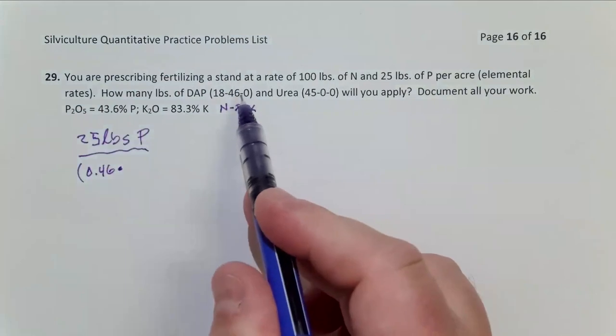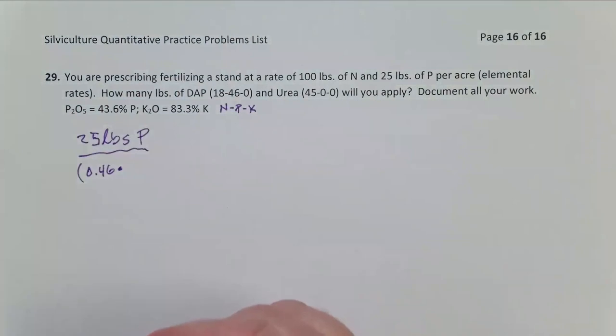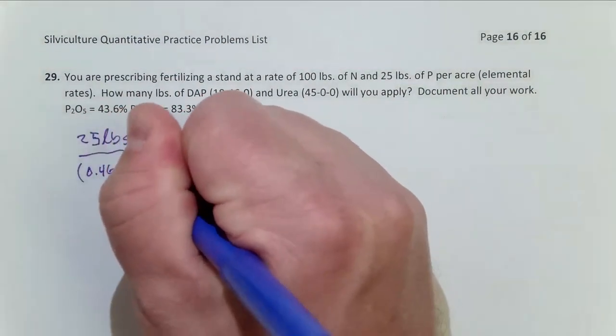But remember, that's actually P2O5. That's not just P, and I know P2O5 is 43.6% elemental P. So that's 0.436.